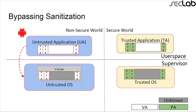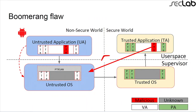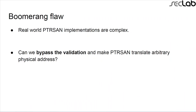Consider an untrusted application that wants to attack the untrusted OS. If it can pass an arbitrary physical address to a trusted application — one that points into the untrusted OS kernel — the trusted application has no idea that the untrusted app cannot access that memory. So the untrusted app can make the trusted application write to kernel memory it has no direct access to. However, I simplified this: there is a sanitization function that's supposed to prevent this. But real-world PTRSAN implementations are complex, so we analyzed all the popular TEE implementations to see whether they could be bypassed.